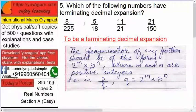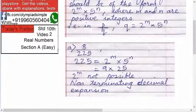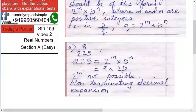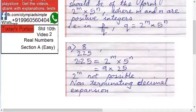So how do we do it? Let's check the first one: 8 upon 225. See, 8 upon 225. So 225 equals—only focus on the denominator, nothing about the numerator. 225, we should be able to express this as 2 raised to m times 5 raised to n.